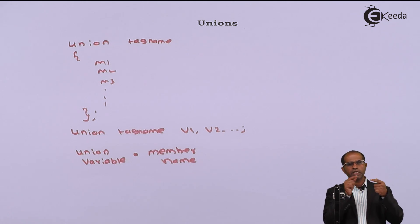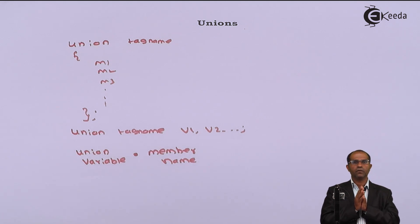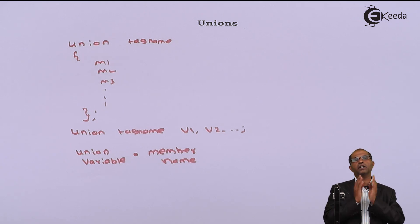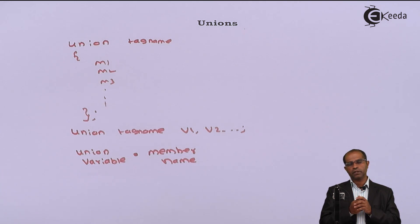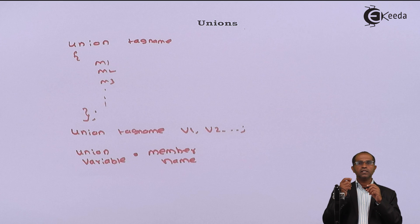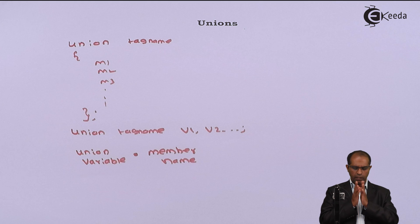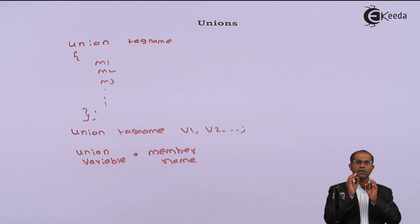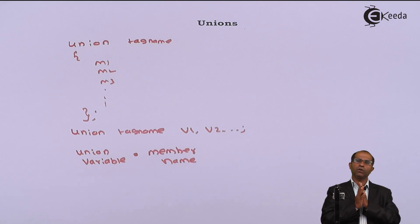But when we go with a union, the size is always equal to the maximum member size. If I have 10 members, whichever member has the maximum size — that size is identified as the size of the union. That is the core difference: size of a structure is the sum of sizes of every member, whereas size of a union is the size of the member which occupies maximum size.